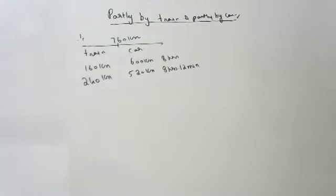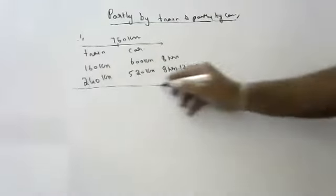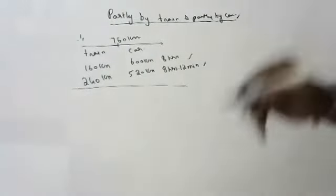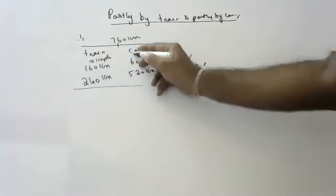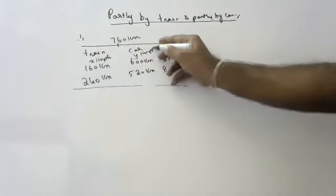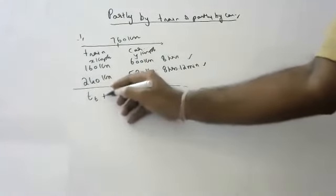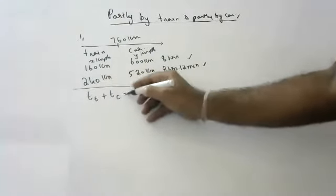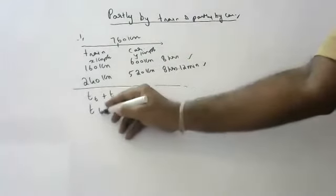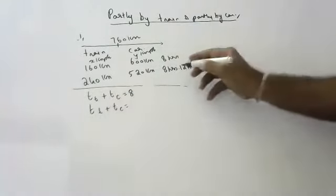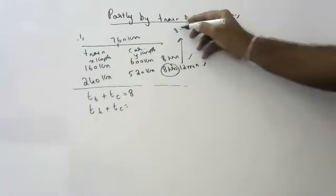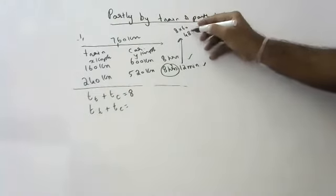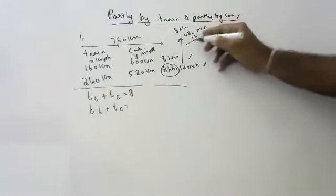This is an important question. Here we have two conditions. Let the speed of the train be x kmph and the speed of the car be y kmph. In the first case, time of train plus time of car equals 8 hours. In the second case, time of train plus time of car equals 8 hours 12 minutes.